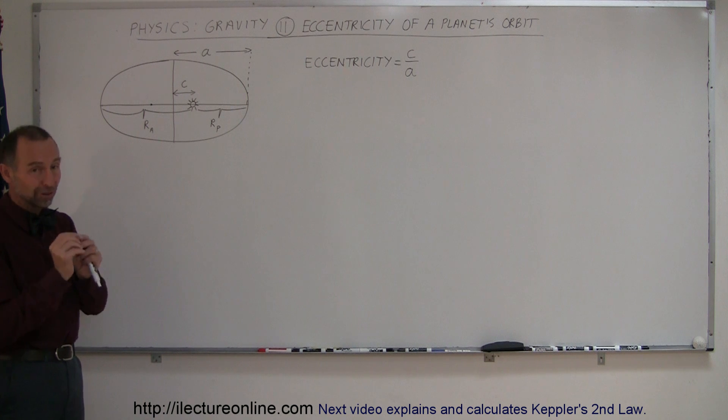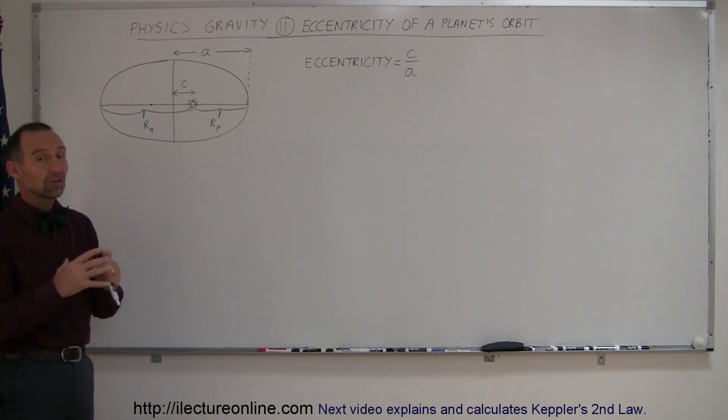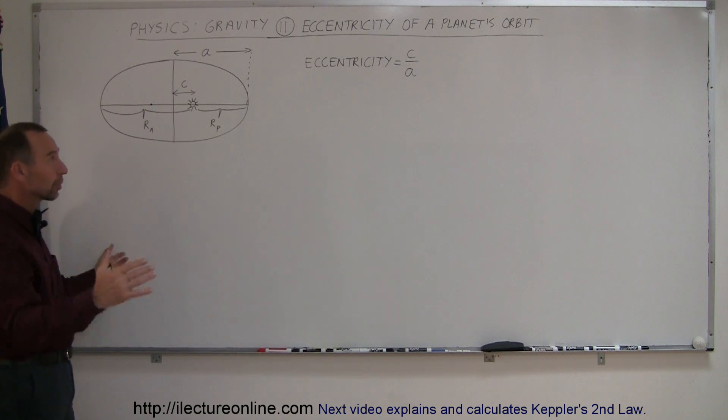If the eccentricity is very small or zero, then it's circular or nearly circular. If the eccentricity is a large number, then it's very elliptical. The orbit is very elongated.